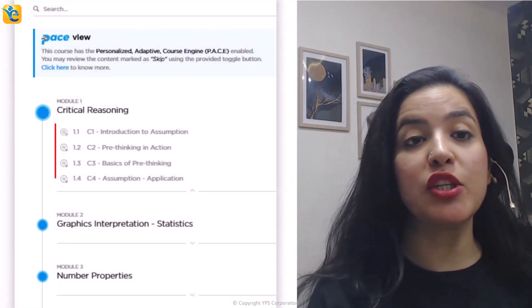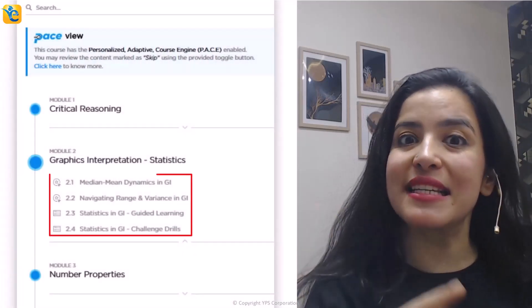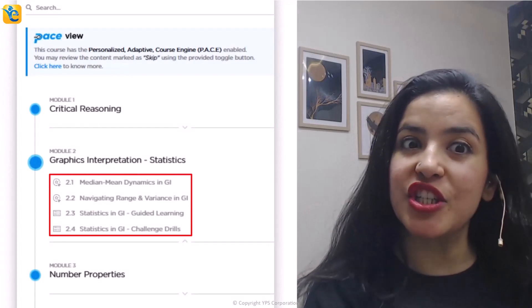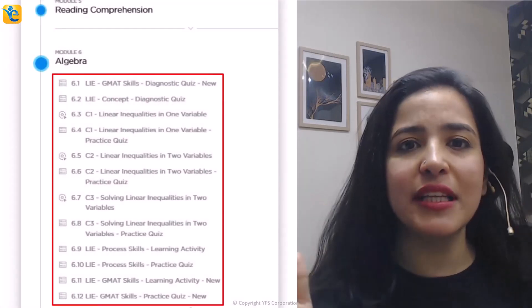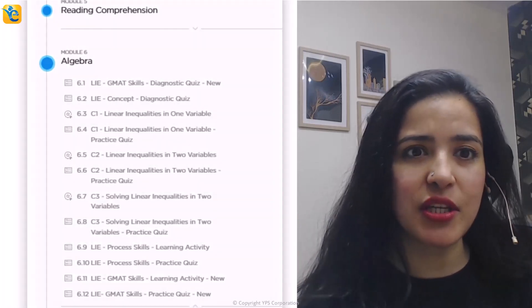For example, you can build your CR pre-thinking skills. You can learn how to approach statistics questions in graphics interpretation as part of DI. You can learn everything about linear inequalities as tested on the GMAT Focus Edition and a lot of other content. The link for this is in the description. Now let's get back to the question at hand.